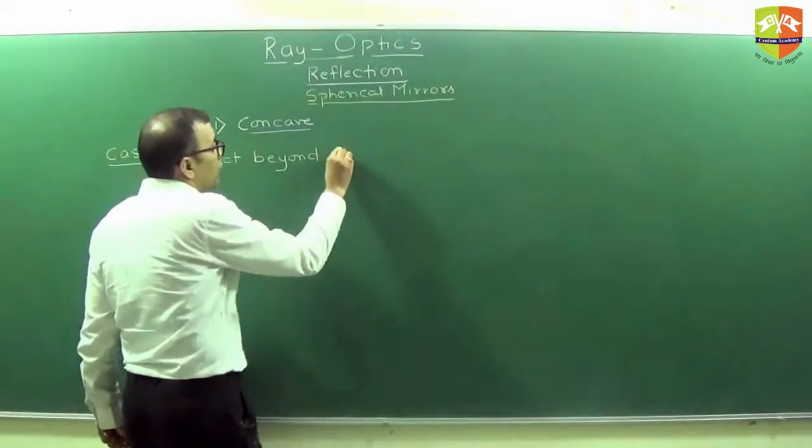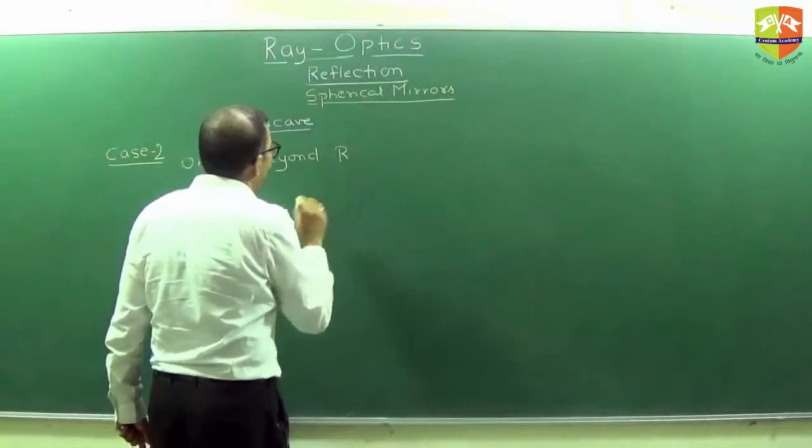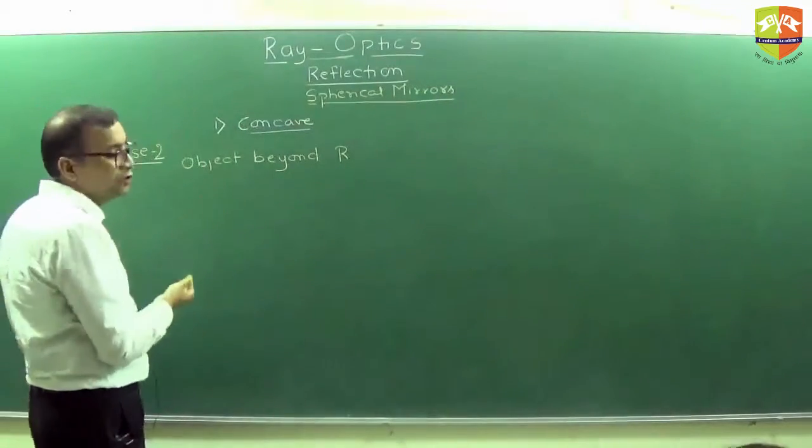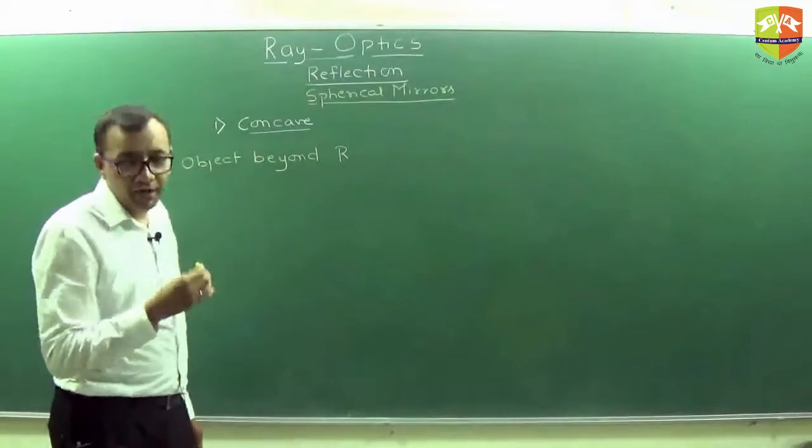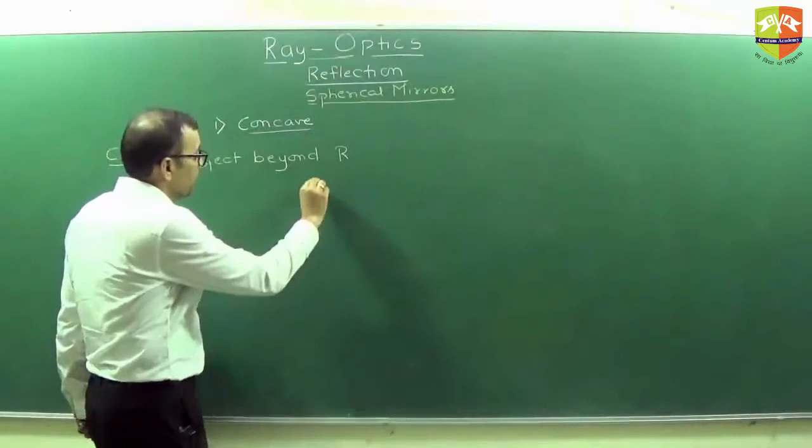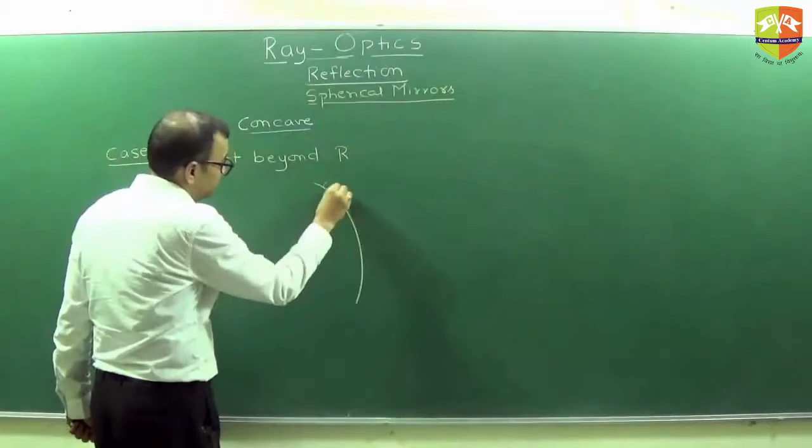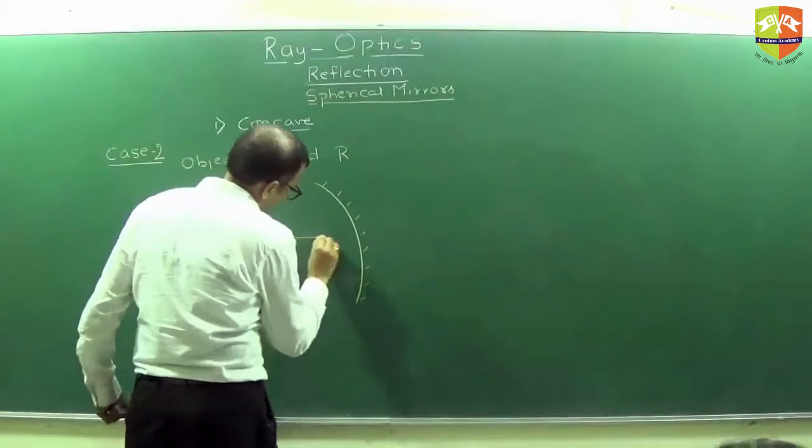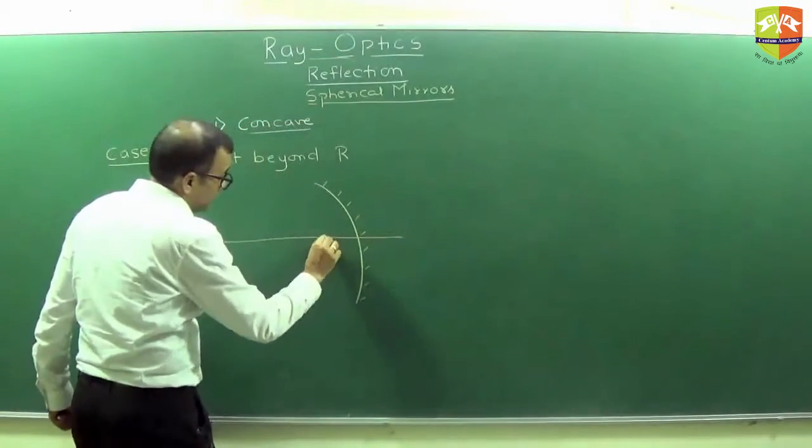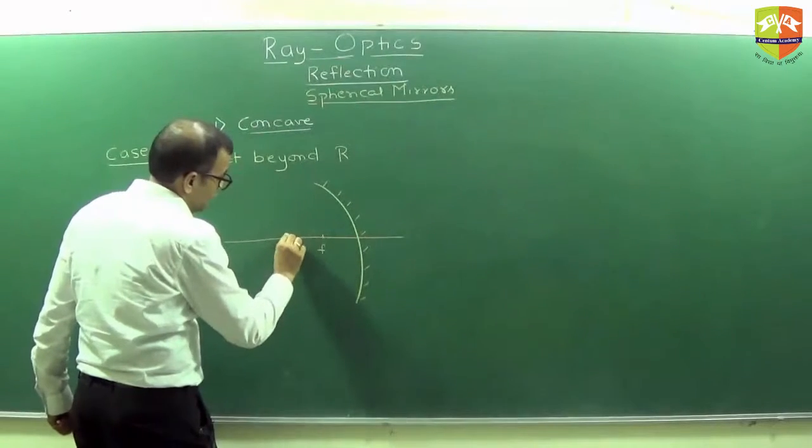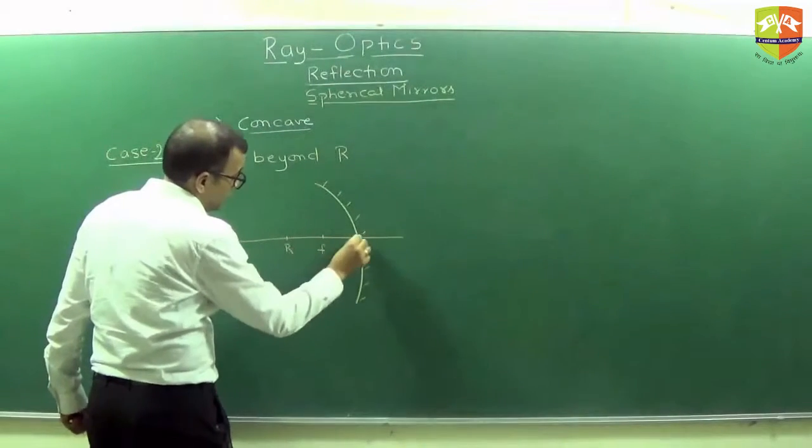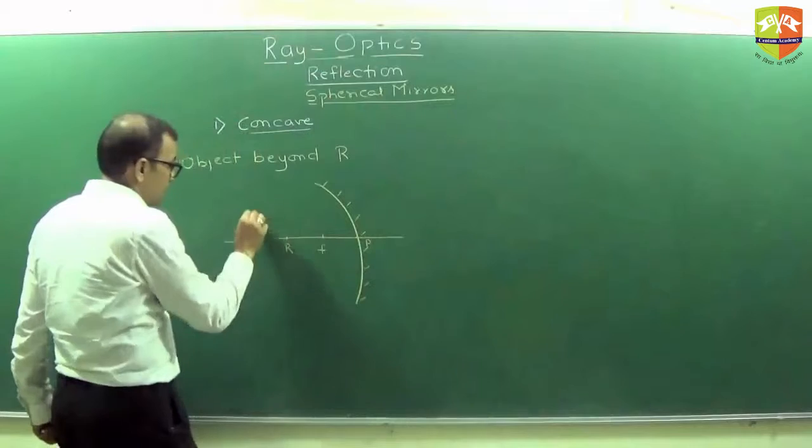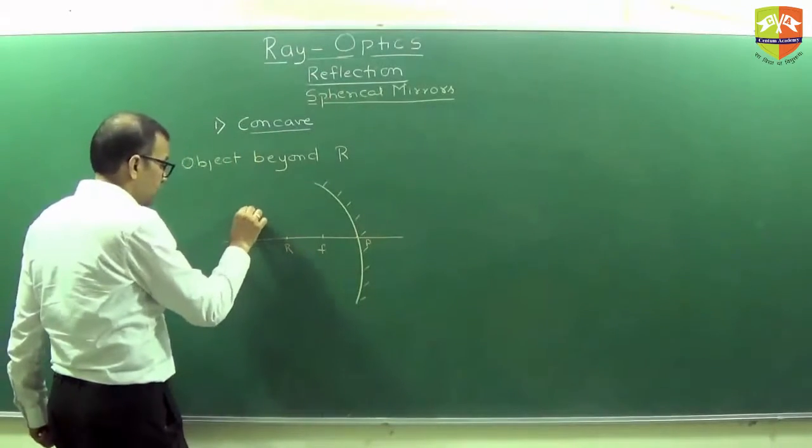Object beyond R, as in I want to say object between infinity and R. Draw a ray diagram. This is focus, this is R, this is P and here is the object.